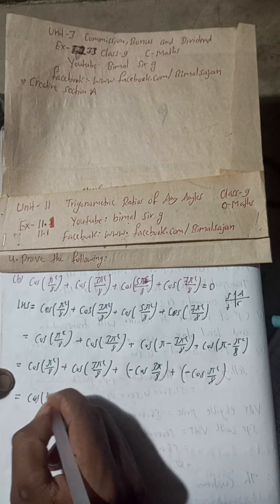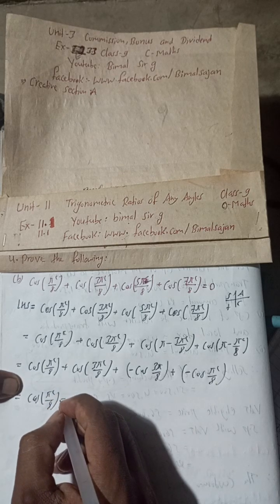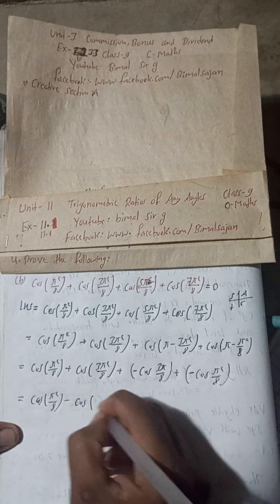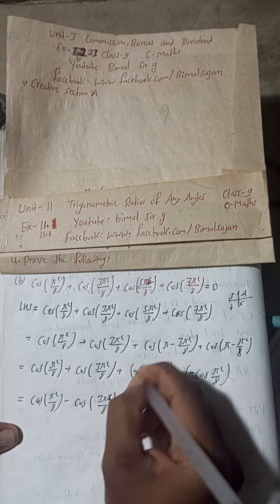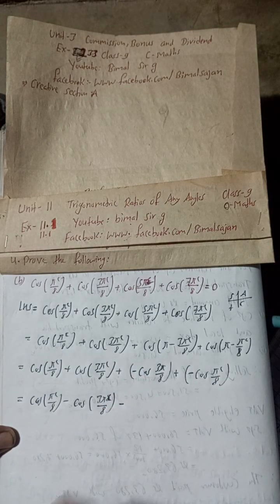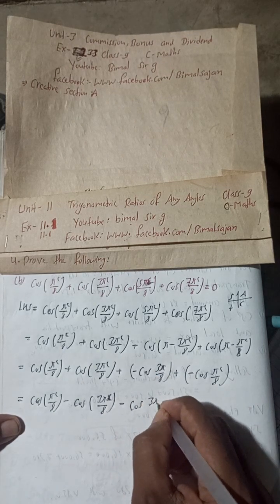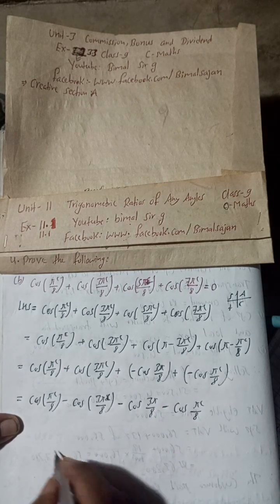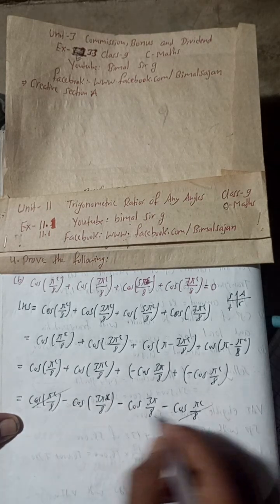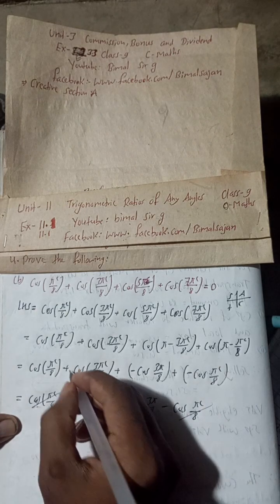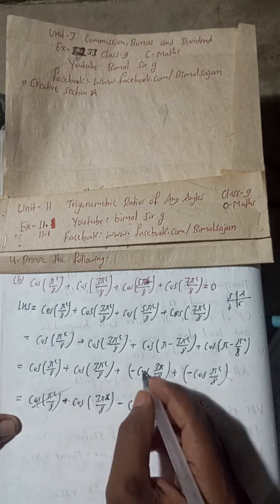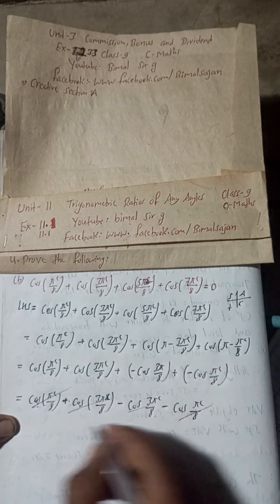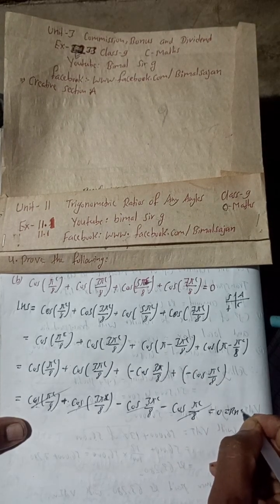So now we have: cos π/8 + cos 3π/8 − cos 3π/8 − cos π/8. The positive and negative terms cancel each other. This is equal to 0, which equals the RHS. Proved. This is the complete solution.